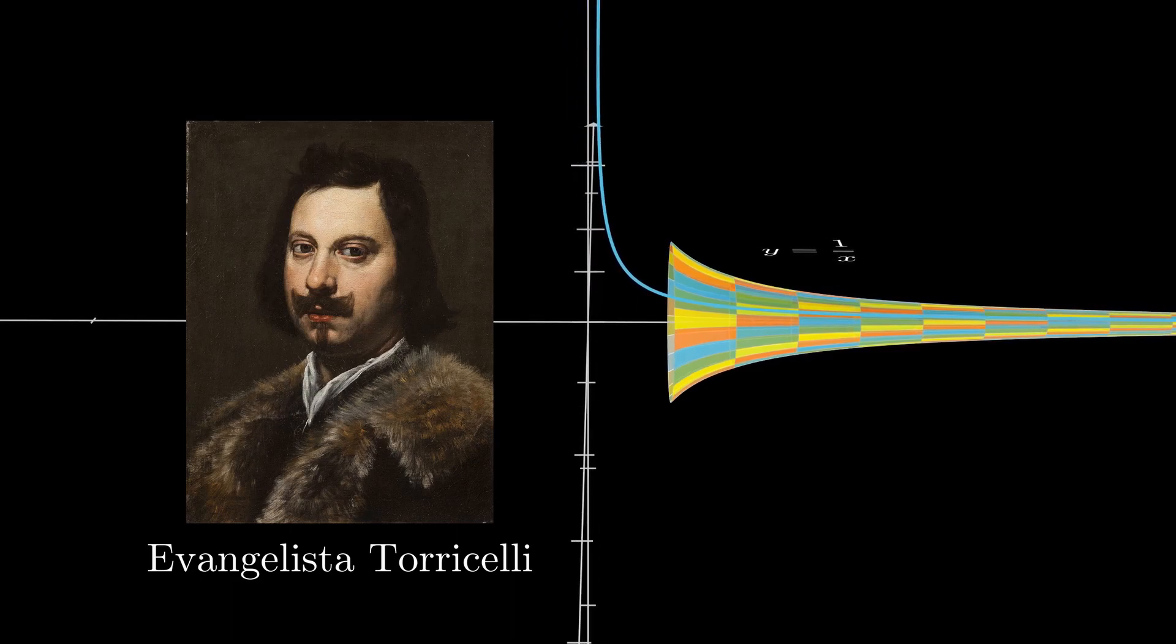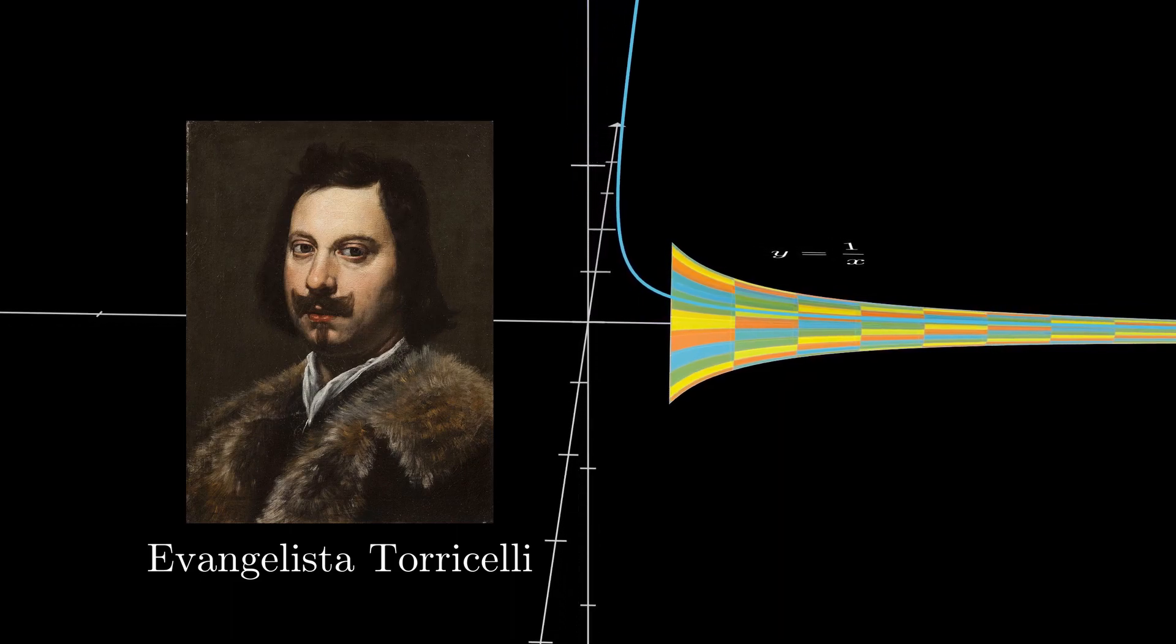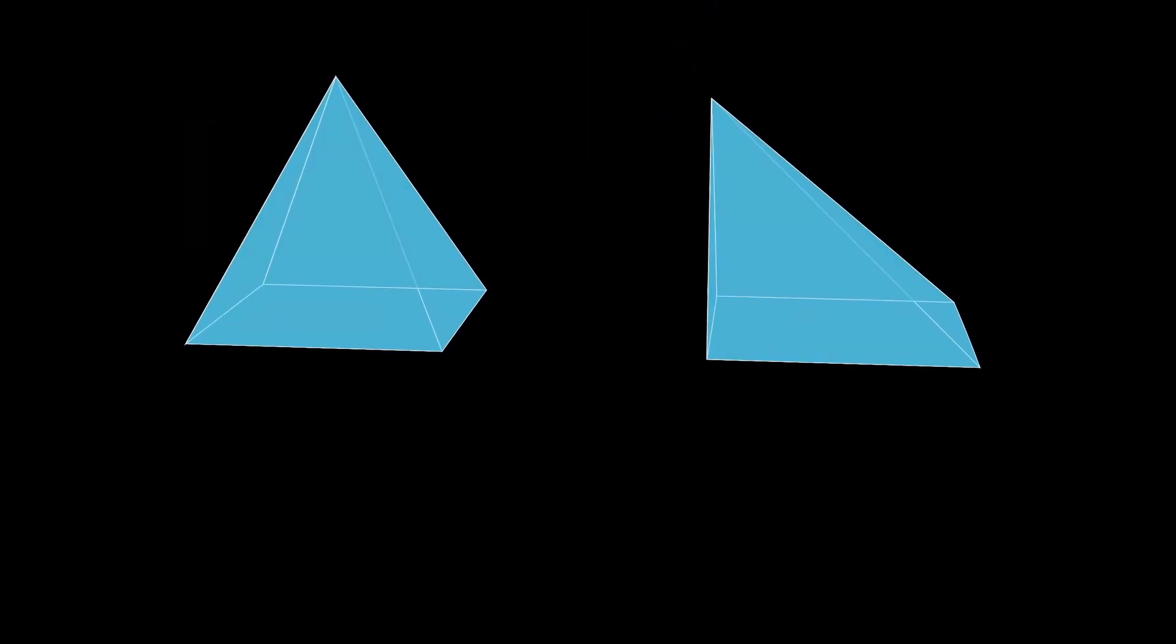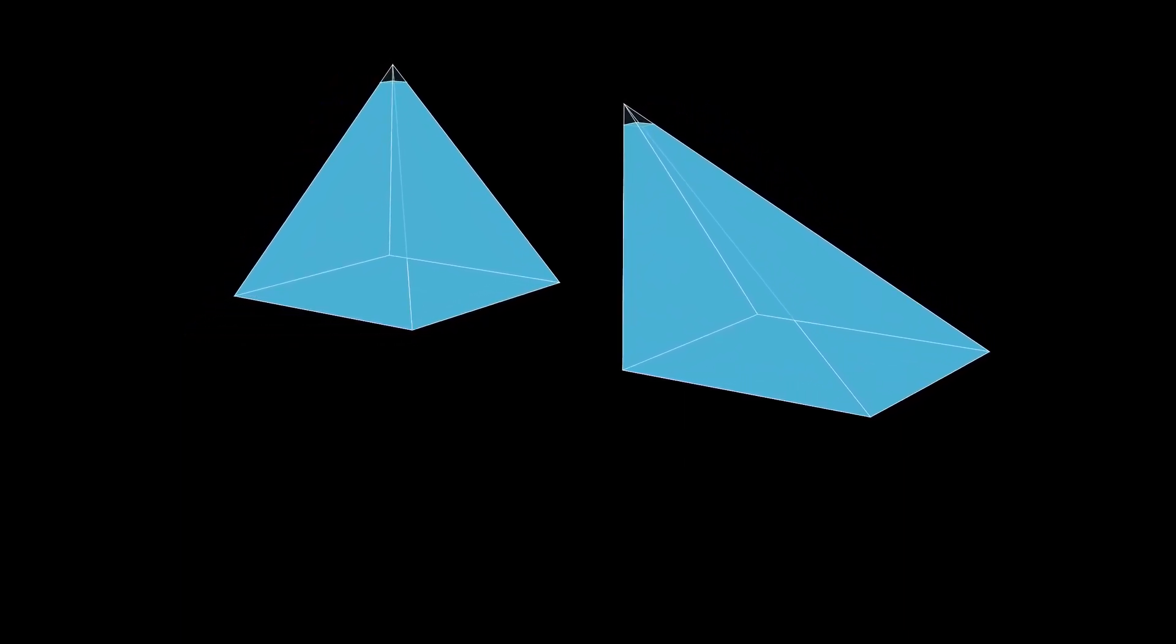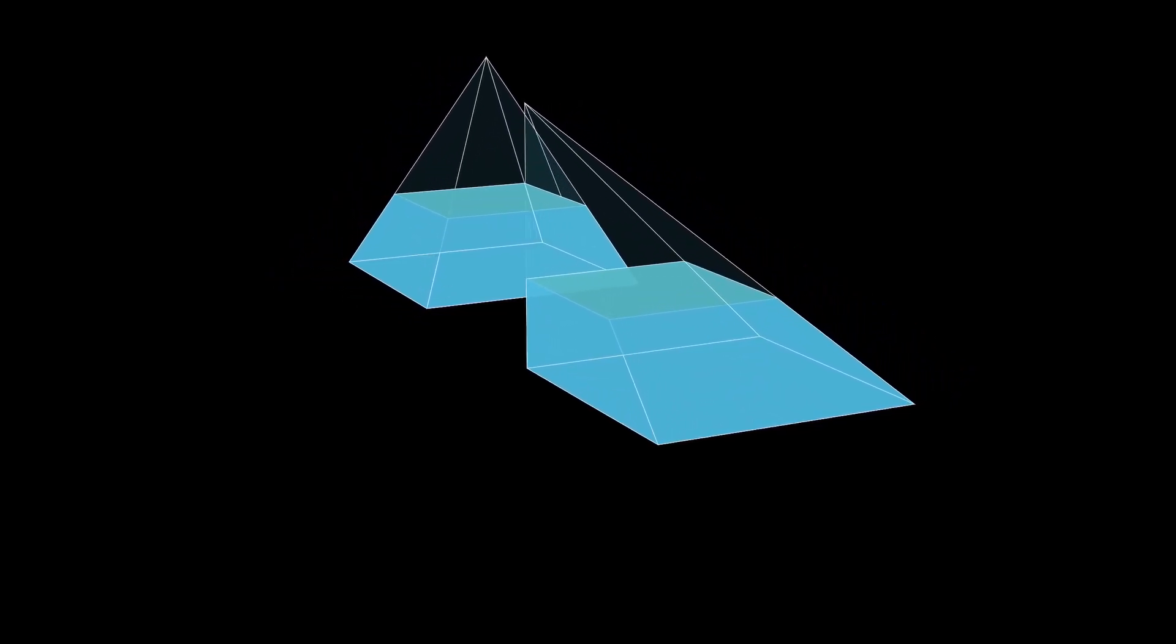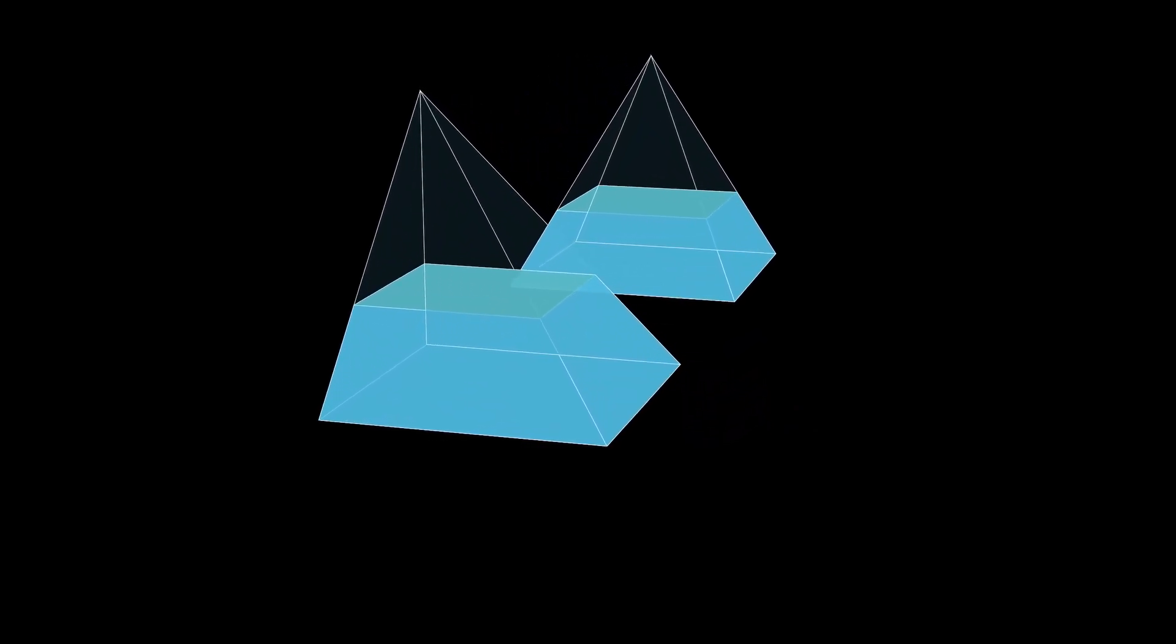Torricelli used the powerful Cavalieri's principle in showing this result. This principle is not new in our channel. We already used the two-dimensional version of it to find the area under a cycloidal arch. The three-dimensional case is analogous. It states, if every plane parallel to the common base of two solids intersects them in sections of equal area, then both the solids have equal volume.